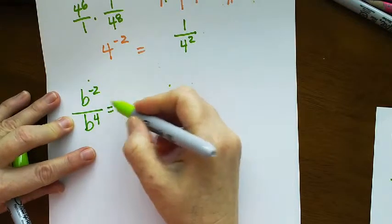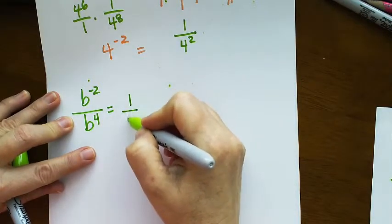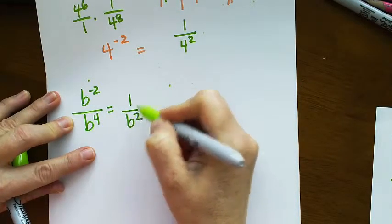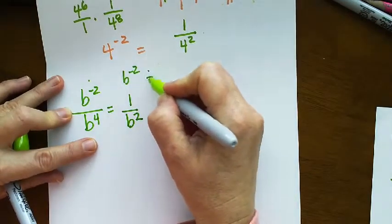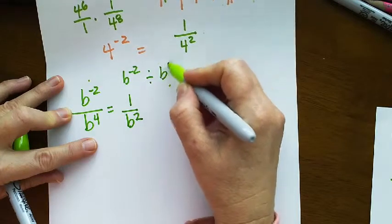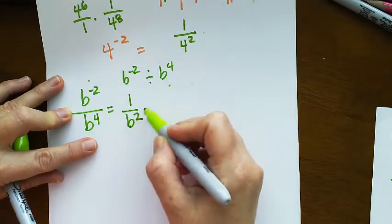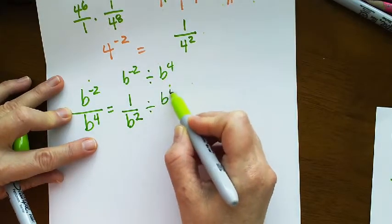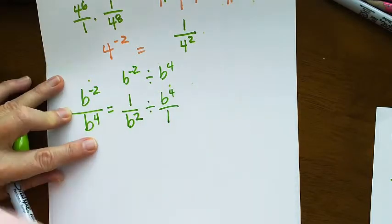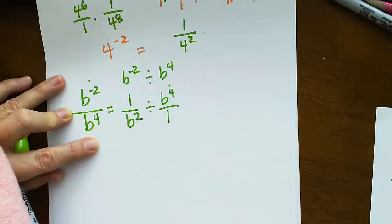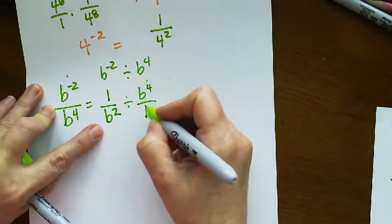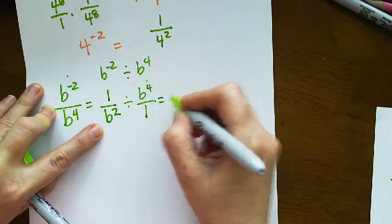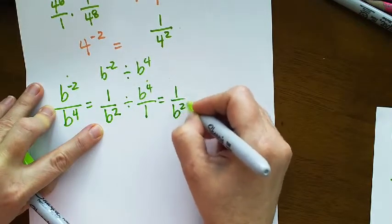So this is like saying 1 over B squared. This is B to the negative 2 divided by B to the 4th. So that's 1 over B squared divided by B to the 4th over 1, which if you remember copy dot flop or however you learned this in middle school when you're dividing fractions you change this to multiplication.